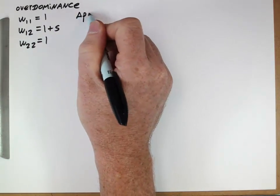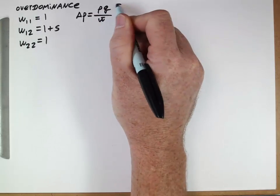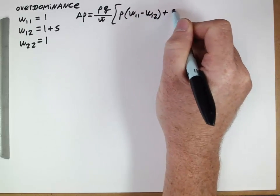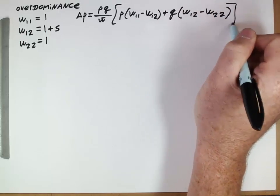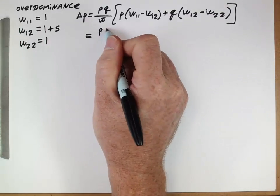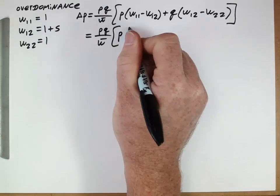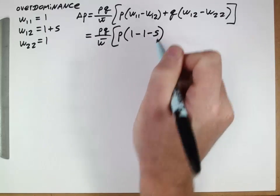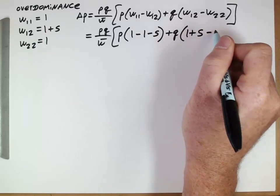Let's start with our delta P equation and see where we go from there. So first, let's just start by writing down our equation, which perhaps by now we're starting to have memorized. Or if not, we're realizing we probably should memorize because we're using it so often. So PQ over W bar. Plug these fitnesses in here. W11 is 1 minus W12, so that's minus that. Plus Q, W12 minus that.